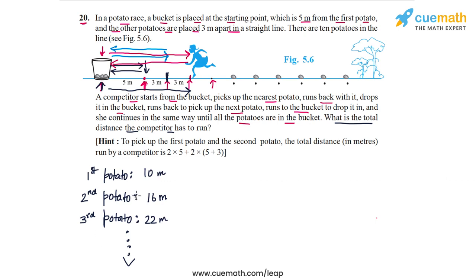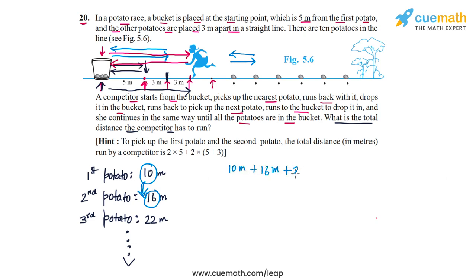This is an arithmetic progression in which the first term is 10, and every term is 6 meters more than the previous one, because for every next potato the competitor has to run 3 meters extra one way and 3 meters extra the other way — a total of 6 meters extra for every subsequent potato. That is why we get this series with a common difference of 6. The total distance is 10 plus 16 plus 22 and so on, up to the 10th term.